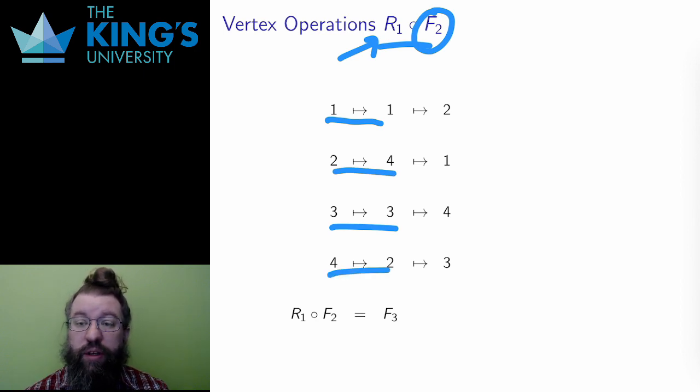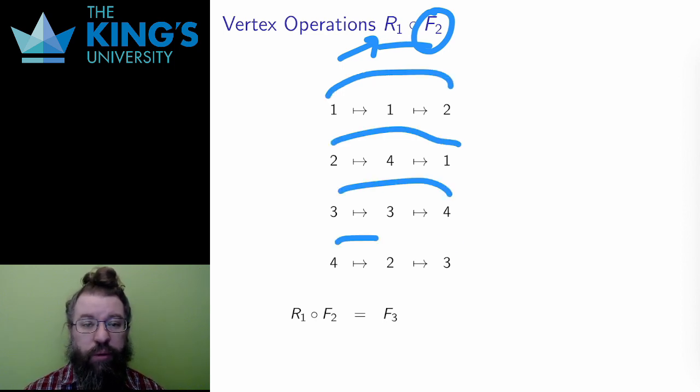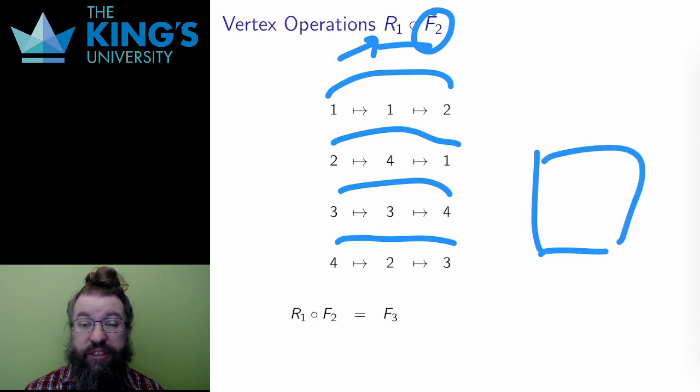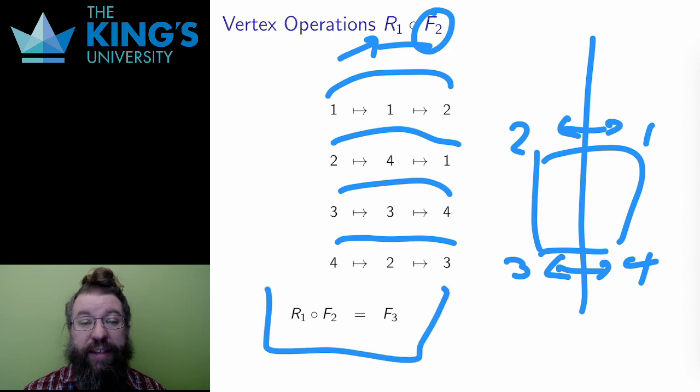Then I use R1. Well, what did R1 do? It sent 1 to 2, 2 to 3, 3 to 4, and 4 to 1. So then I apply that to the vertices that came out of F2. Put together, I get a new transformation that sends 1 to 2, 2 to 1, 3 to 4, and 4 to 3. What transformation is this? Well, if I draw it out and look at all eight possibilities, it's reflection over the vertical line. I called this F3. So by using the vertex operations, I can calculate that R1 composed F2 is F3.